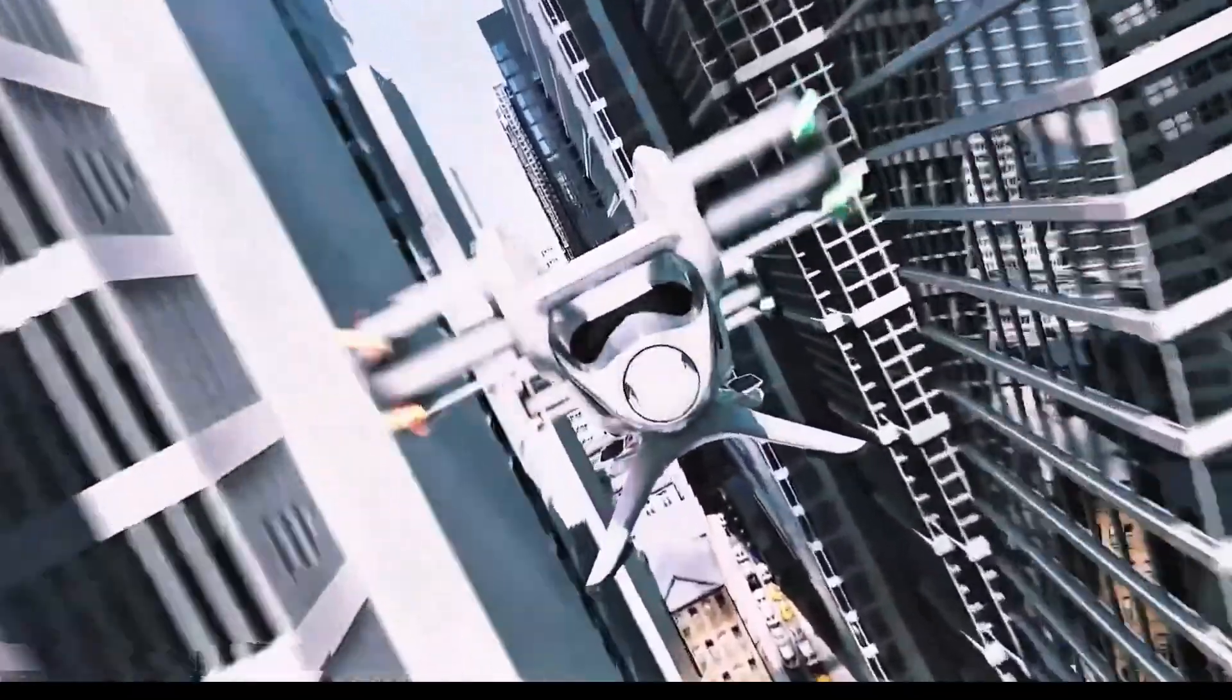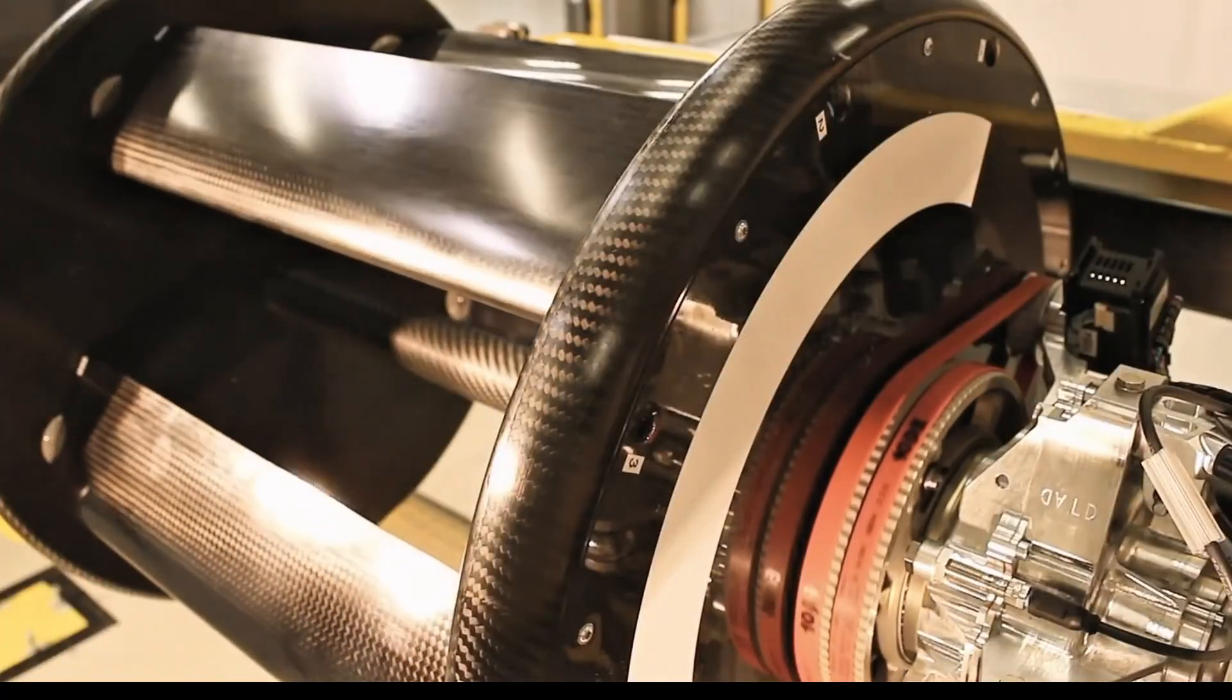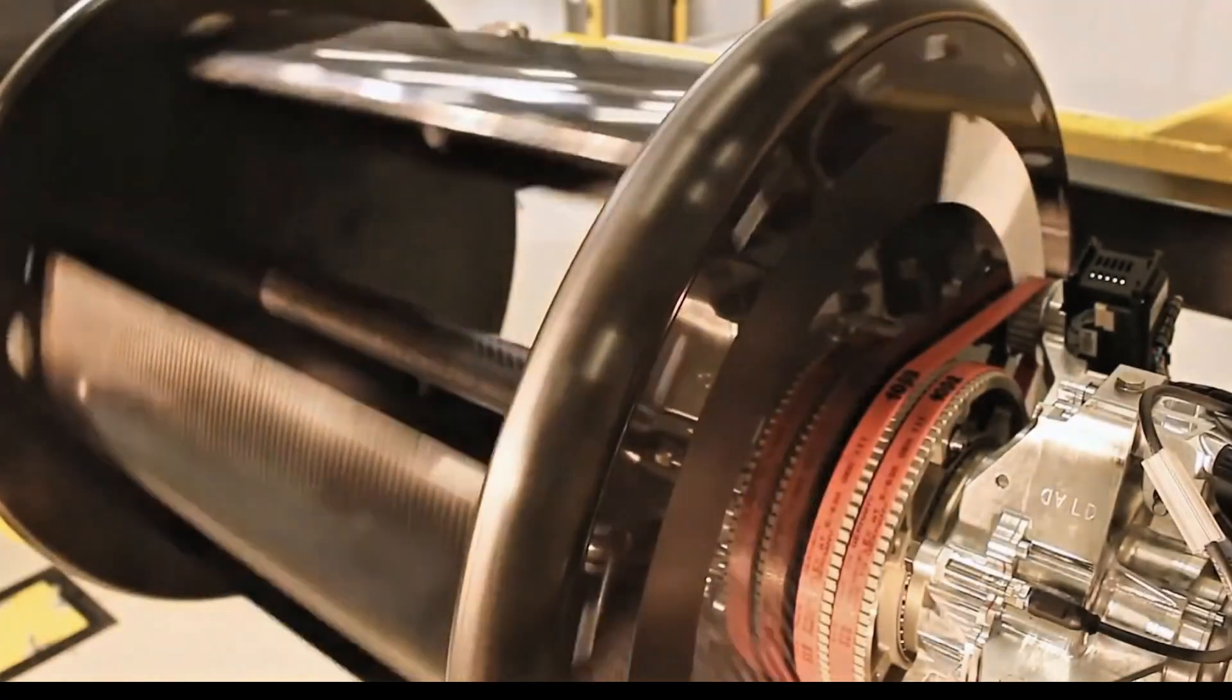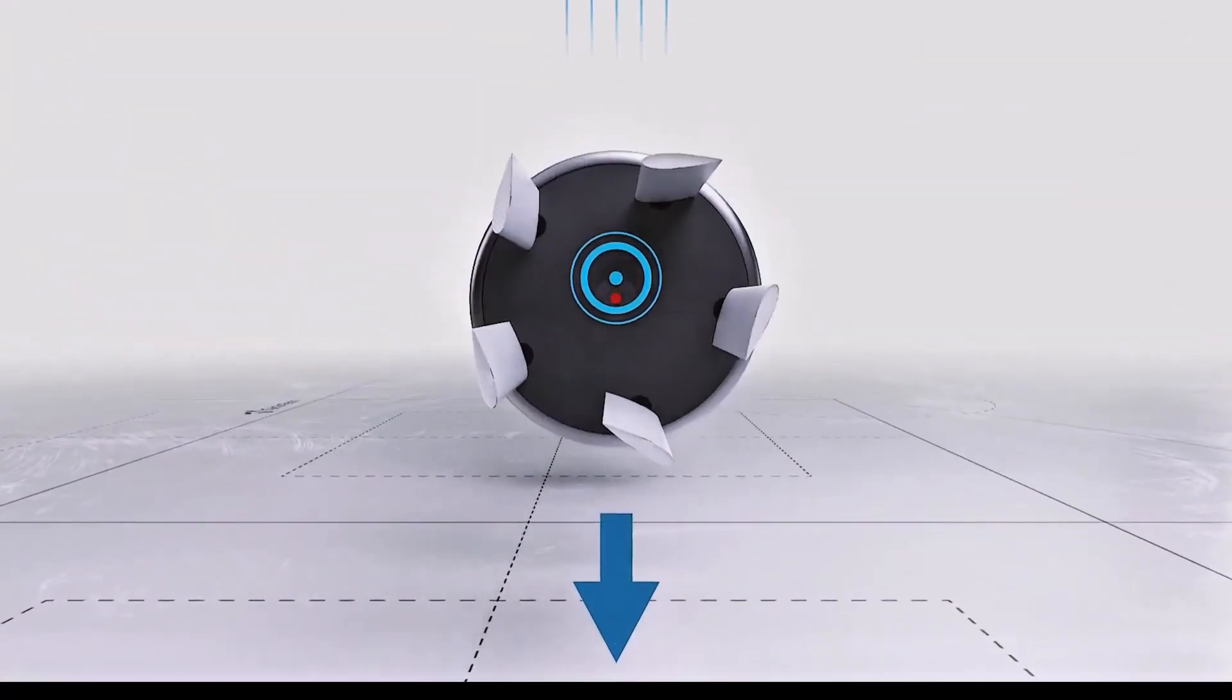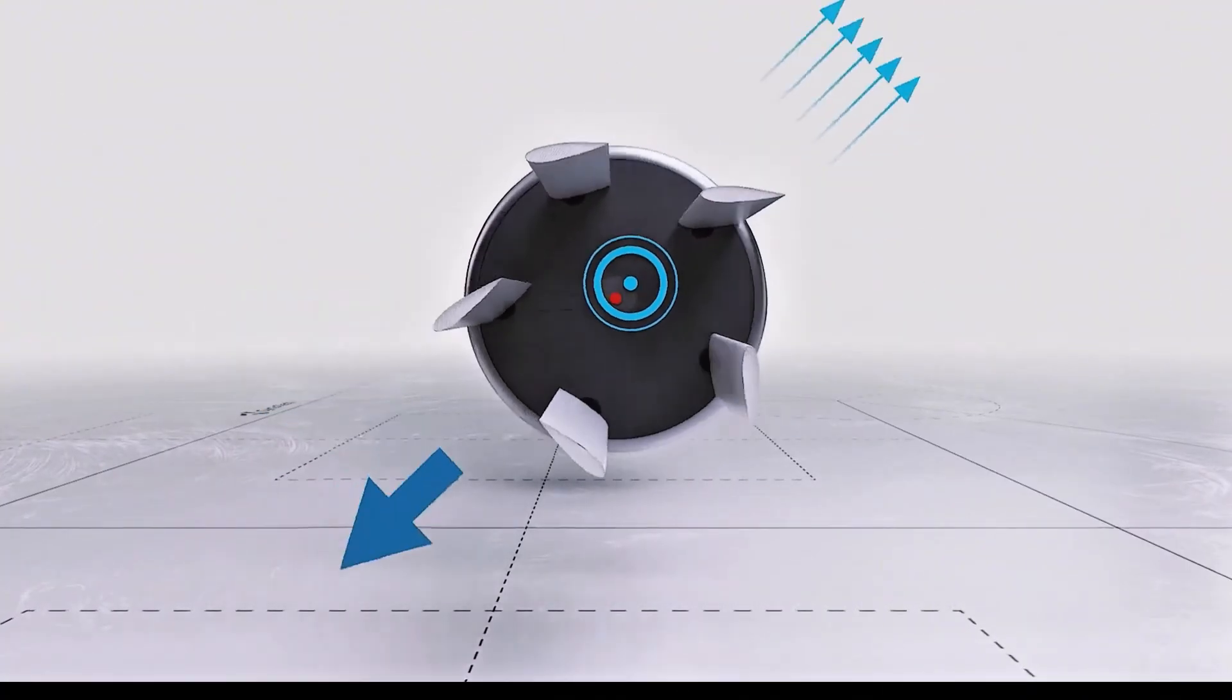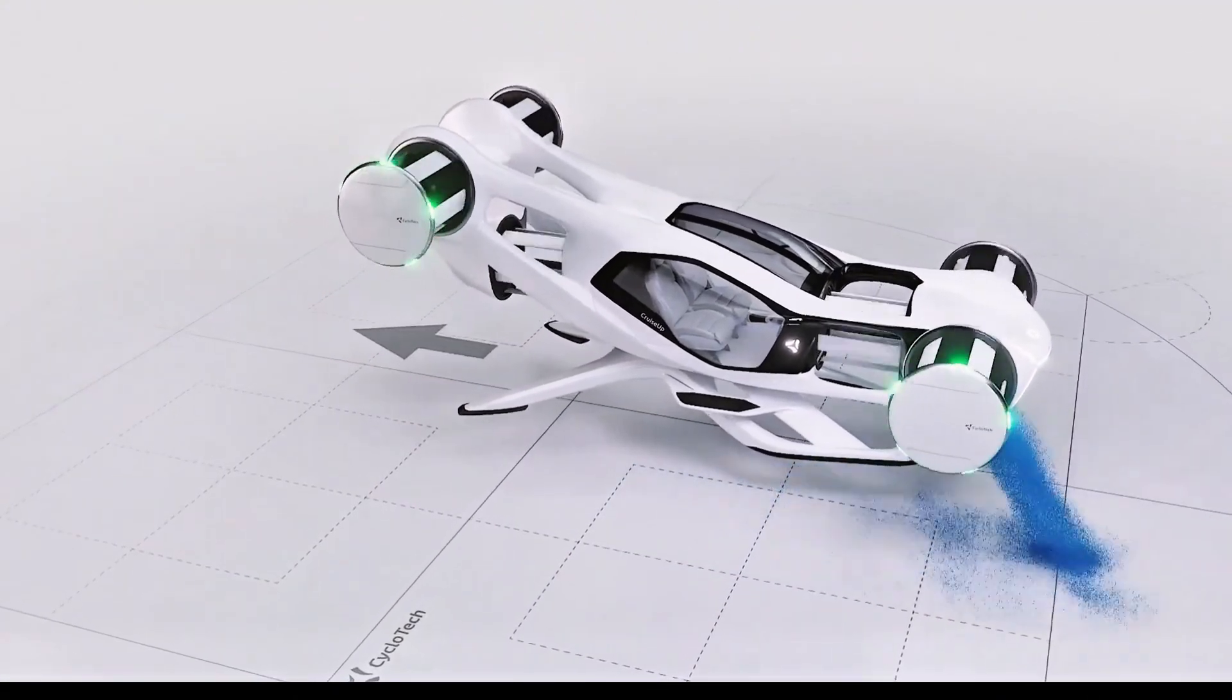Why Onshape? Because it makes complex designs easy to manage. It keeps everything organized and up to date, and you can share your project with others instantly. Want to see how your cycloidal propeller moves? Onshape lets you animate the parts, so you really see those blades vectoring thrust 360 degrees. It's basically a virtual lab where you can spin, tilt, and twist parts without getting wet.